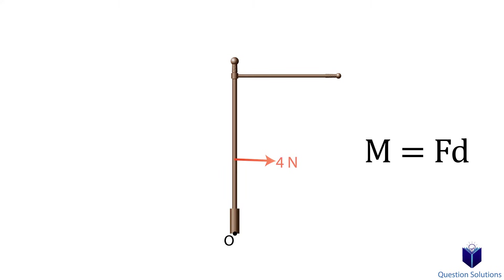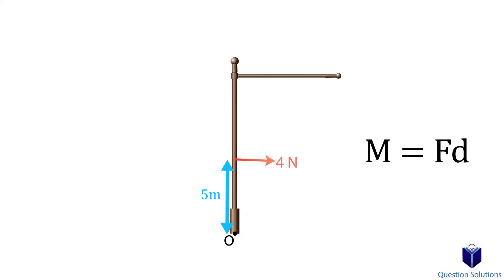For example, if we had a couple moment of 20 newton-meters and our resultant force only had an x-component of 4 newtons, then all we need to do is place the resultant force 5 meters away from point O, and that would create a moment of 20 newton-meters. So now our resultant force accounts for the moment as well. We will do this in the very last example.